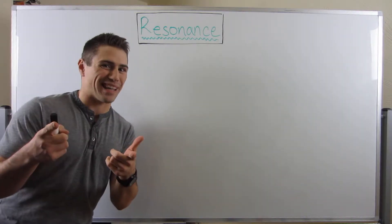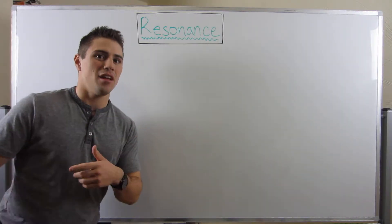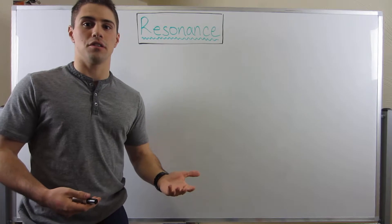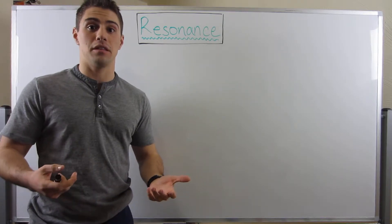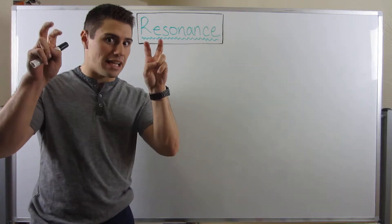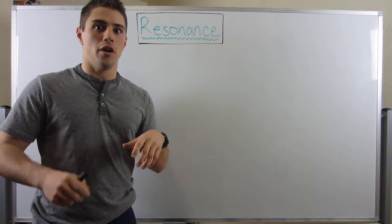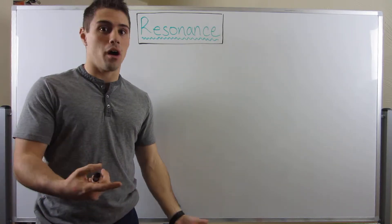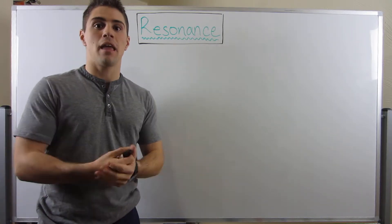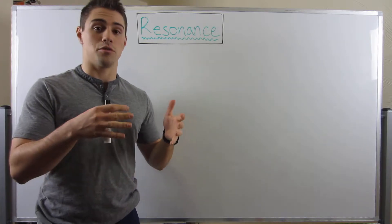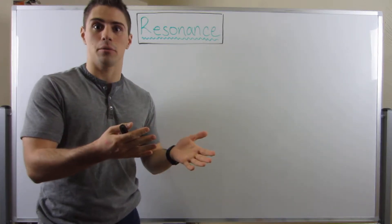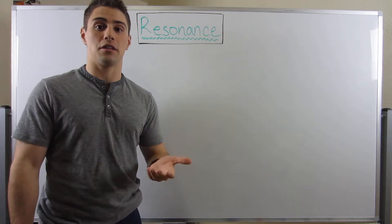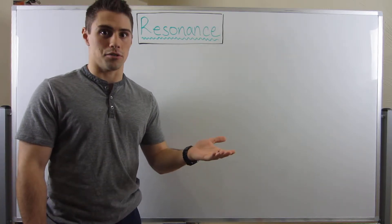Welcome back everybody. So in the last video, we talked about formal charges — how to determine the amount of electrons an atom is in control of, whether those electrons be in a lone pair or a single bond, and then how to determine that atom's valence electron number, and then how to subtract those two numbers to calculate an atom's formal charge.